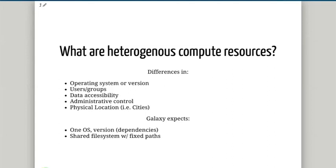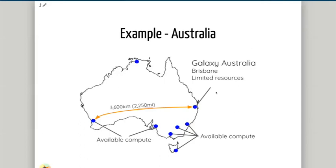To be able to use these resources, Galaxy expects that everything is running on a single operating system, so the versions of all the dependencies can be the same, and that we have a shared file system with fixed paths. Compute resources need access to the Galaxy files as well as the temporary job working directories, and this is not always the case. For example, in Australia our head node used to be in Brisbane but is now in Perth, while we want to utilize compute resources spread out all over the country.